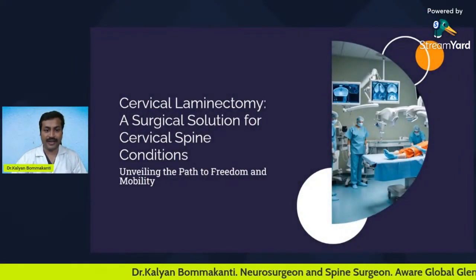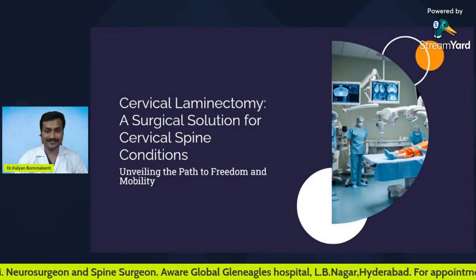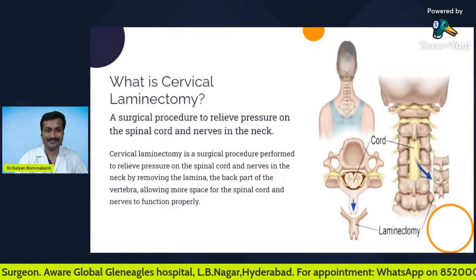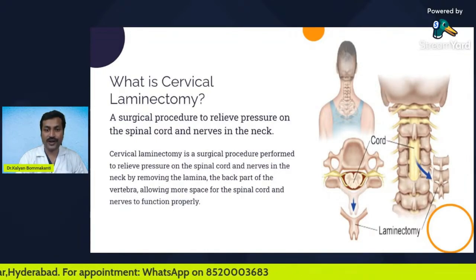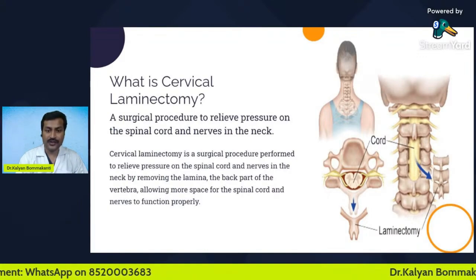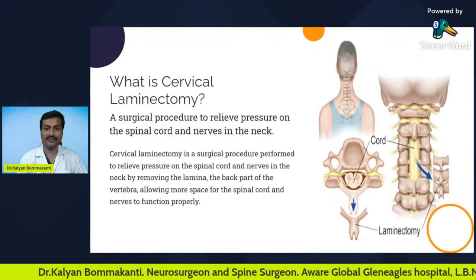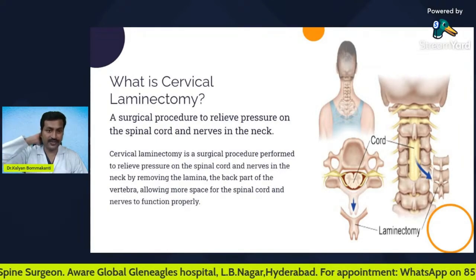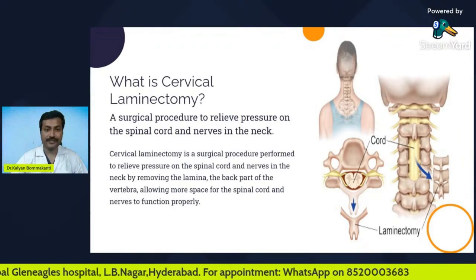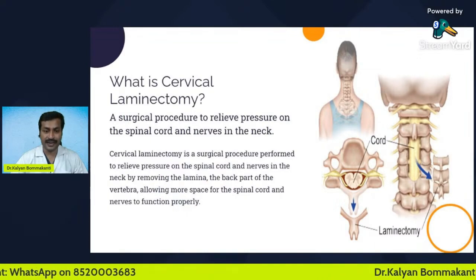So, what is cervical laminectomy? It is a surgical solution for cervical spine conditions. Before I go into cervical laminectomy, try to understand this picture. Here, we are looking at your spine from behind. The spinal cord is enclosed in a bony column known as the vertebral column. The lamina is a part of the vertebral column which is on the back side of your neck. Cervical laminectomy is a surgical procedure performed to relieve pressure on the spinal cord and nerves in the neck by removing the spinal lamina.